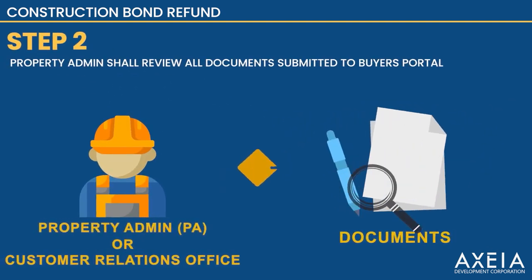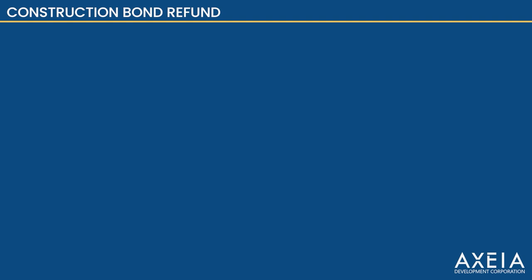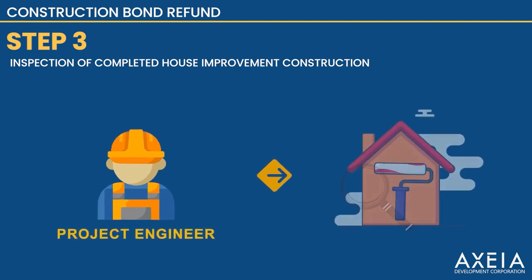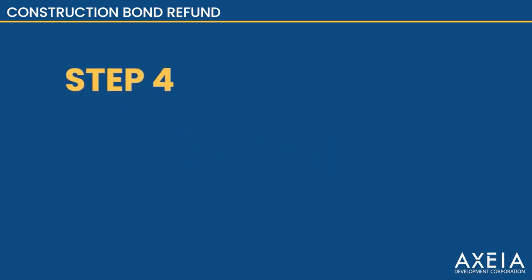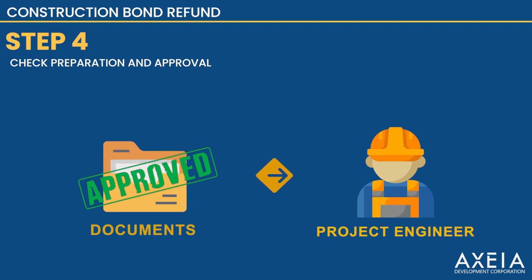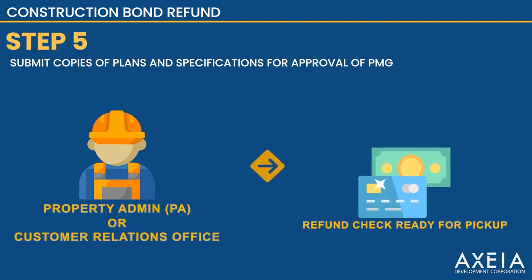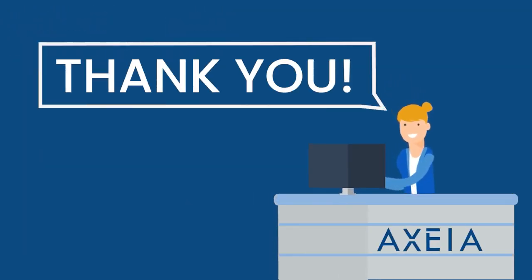The Property Admin shall review all documents submitted to the Buyer's Portal. Step 3. Once completed, it will be posted, then the project engineer will inspect the completed house improvement construction. Step 4. Once approved by the project engineer, it will be endorsed for check preparation and approval, taking 3 to 4 weeks. Step 5. Property Admin or the Customer Relations Department shall inform the homeowner once the check for refund is available and ready for pickup. Thank you for making Axia your community of choice.